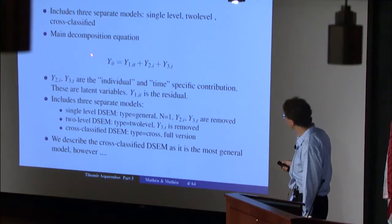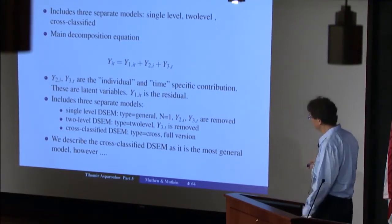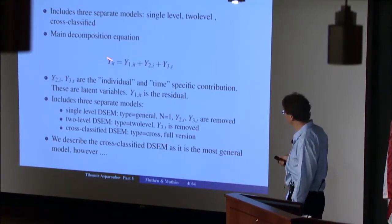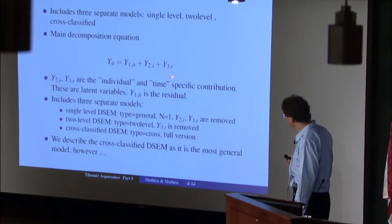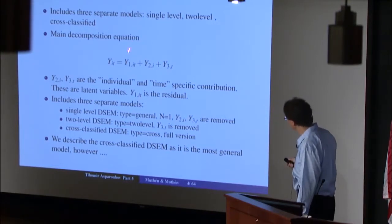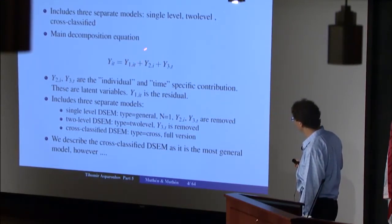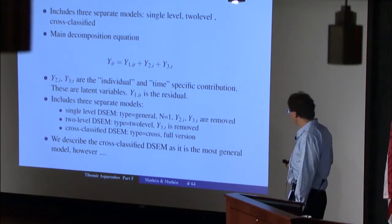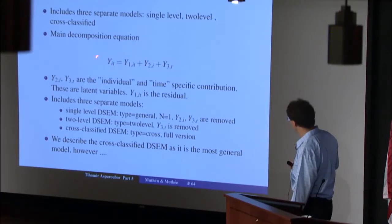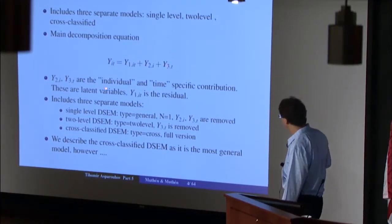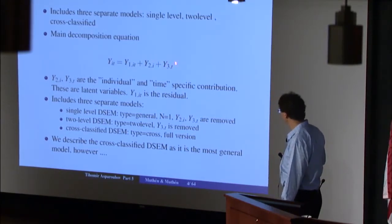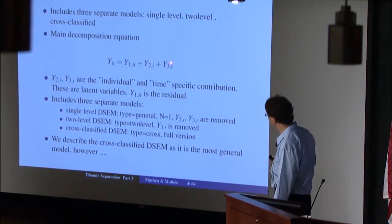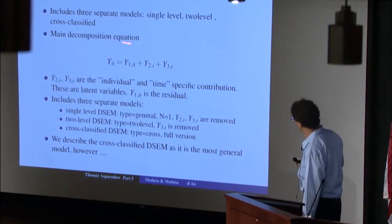If you're familiar with the cross-classified model from version 7.5, this fundamental decomposition equation was also used there. The variable is separated into three latent components, each with its own structural equations. The two-level and single-level descent models are special cases of the cross-classified model: removing the time-specific component gives the two-level model, and removing both the time-specific and individual-specific components gives the single-level model.